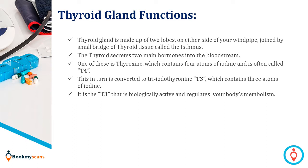The thyroid secretes two main hormones into the bloodstream. One of these is thyroxine, which contains four atoms of iodine and is often called T4. This in turn is converted to triiodothyronine (T3), which contains three atoms of iodine. It is the T3 that is biologically active and regulates your body's metabolism.